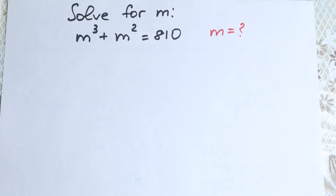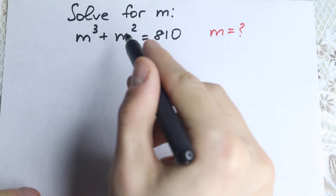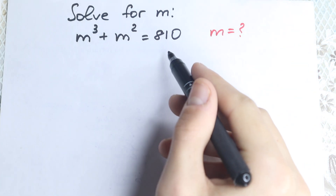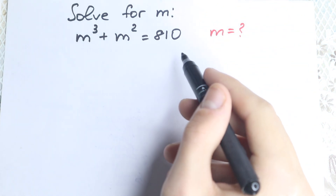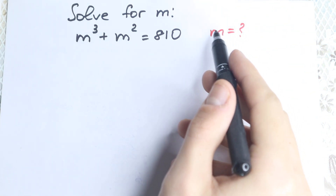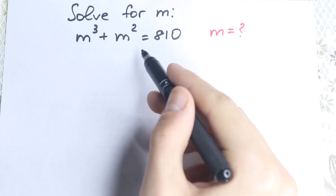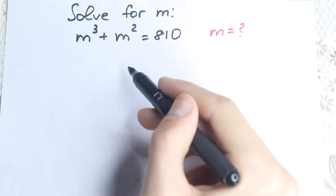Hello my friend! Happy to see you here. In this video we are going to solve a really interesting cube equation: m cubed plus m squared equals 810. What about m? How can we solve this really interesting equation?